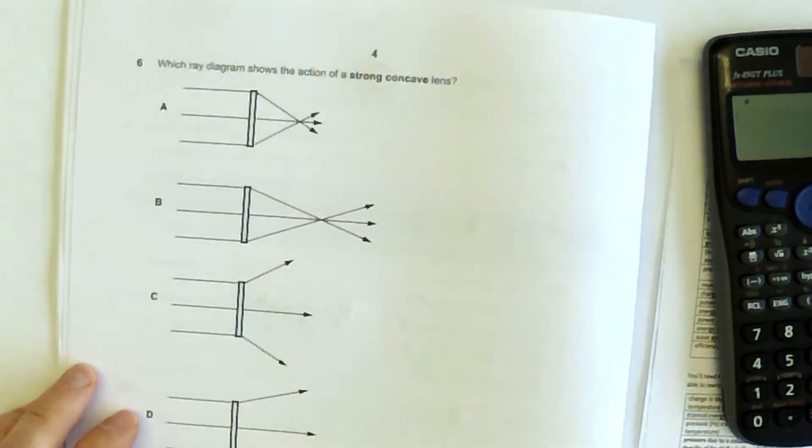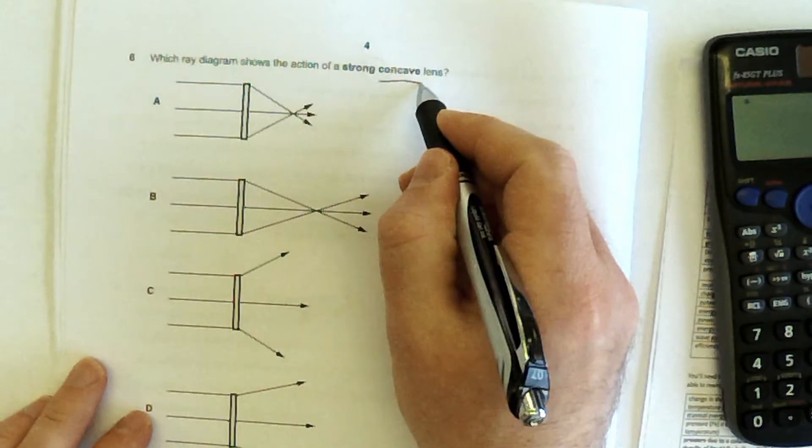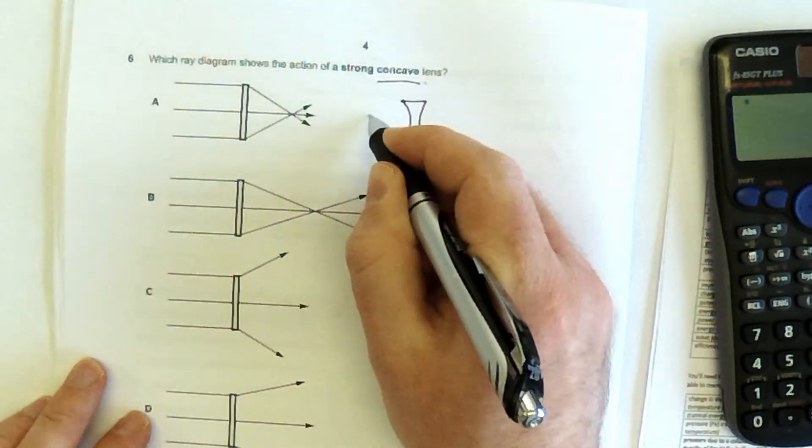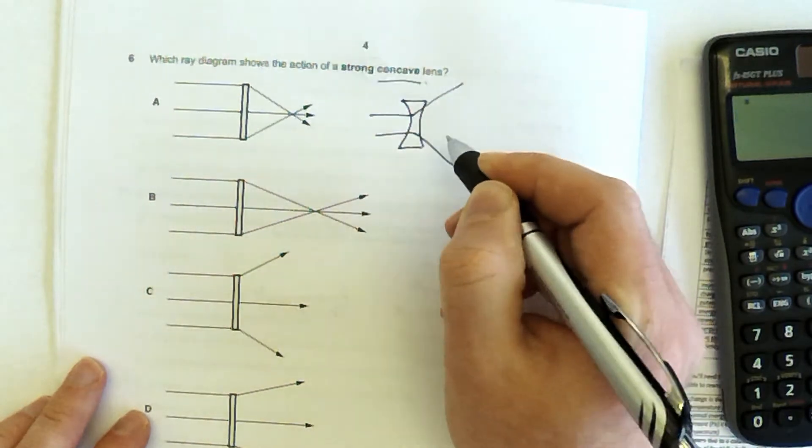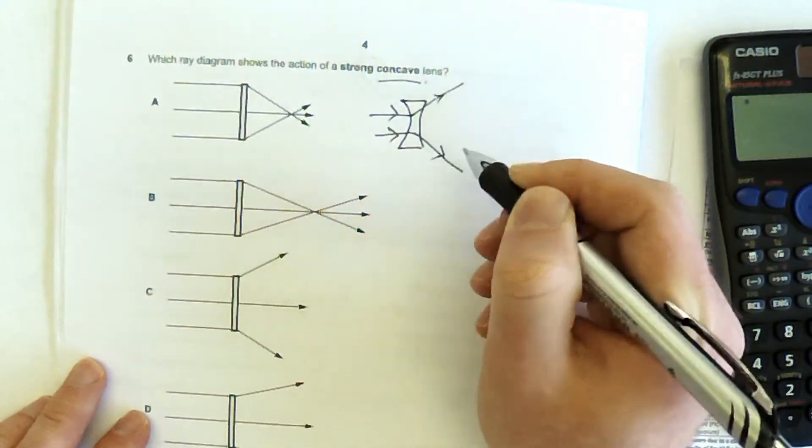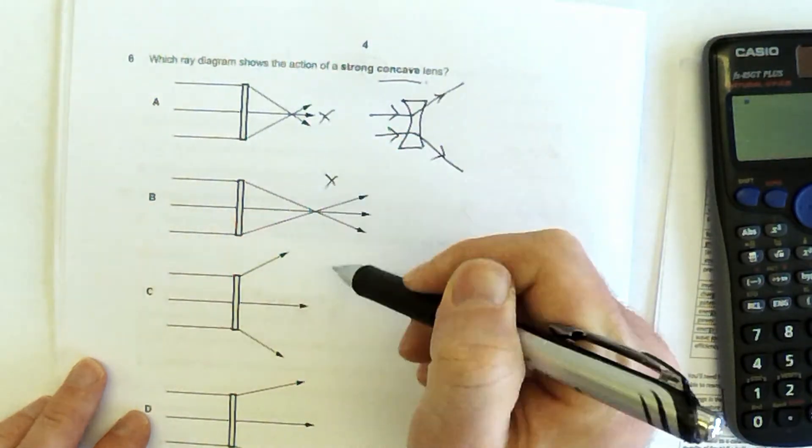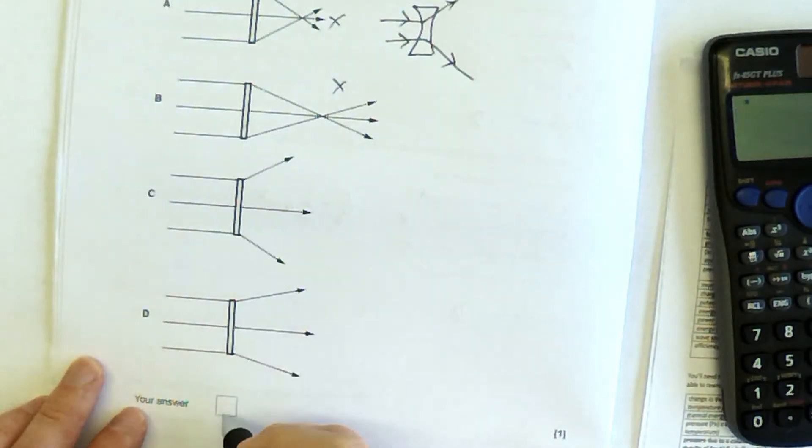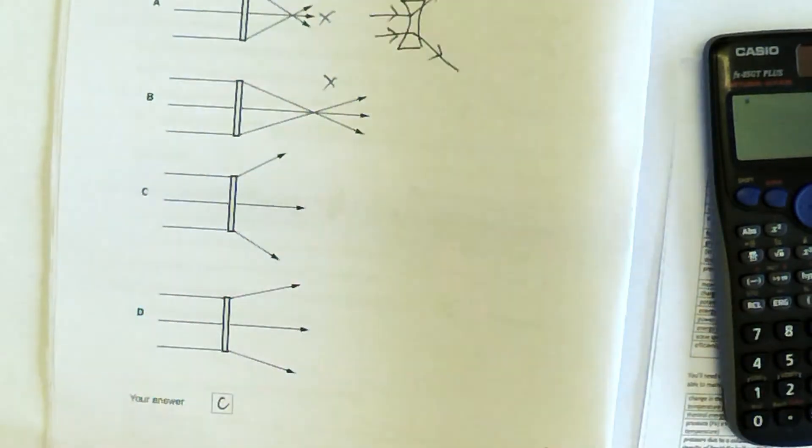Which diagram shows the action of a strong concave lens? So concave, cave in, in the middle, they are diverging lenses, so this happens to parallel beams of light. Which one shows the action? It's not going to be either of these two then, and it says a strong concave lens, so deciding between this one or this one is going to be C, which is doing more of the diverging.